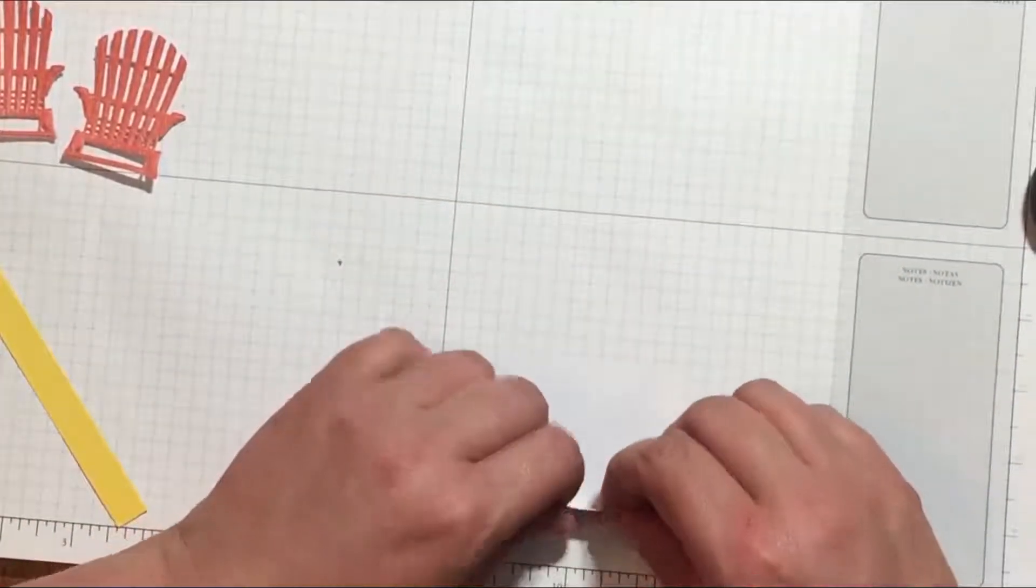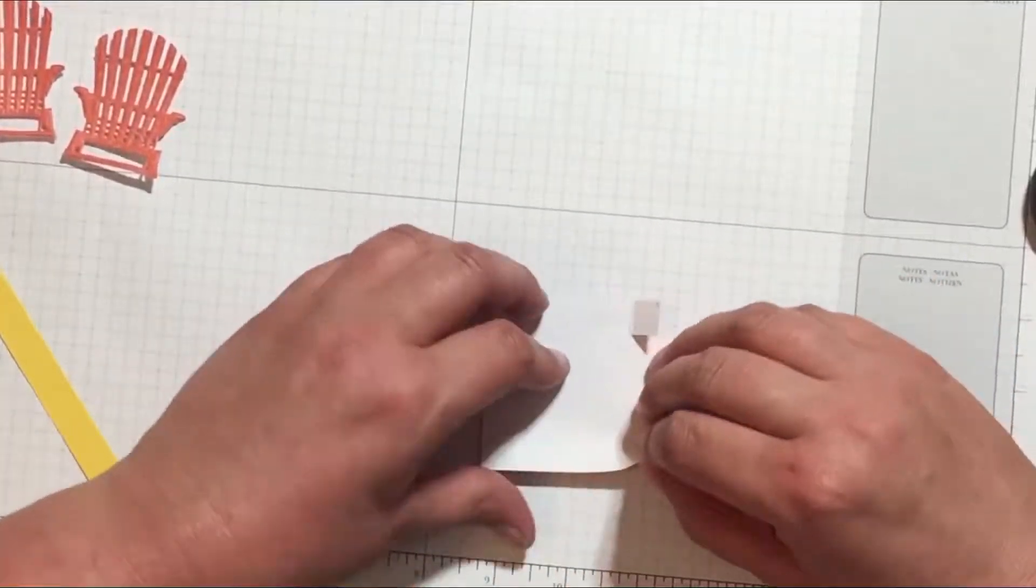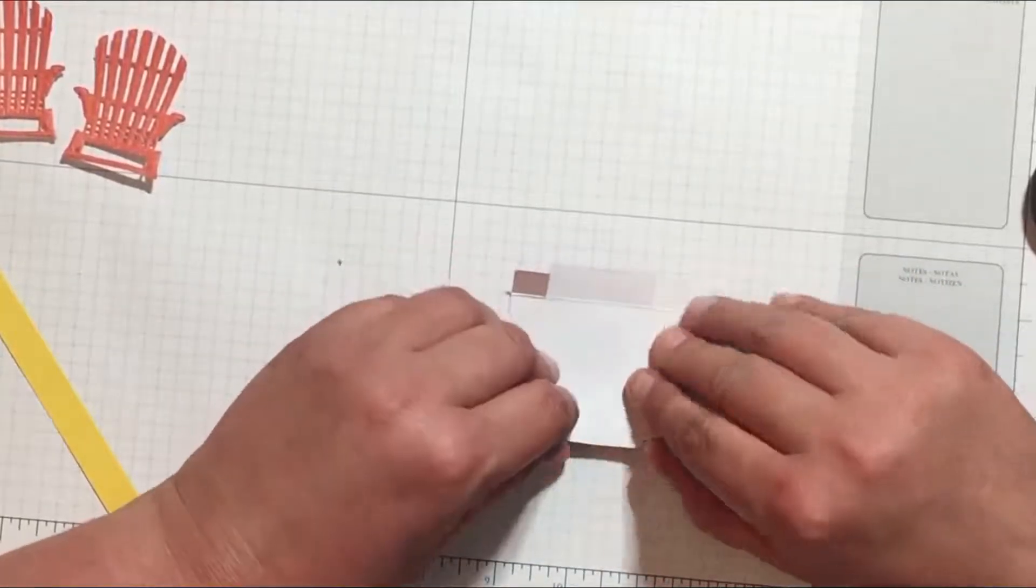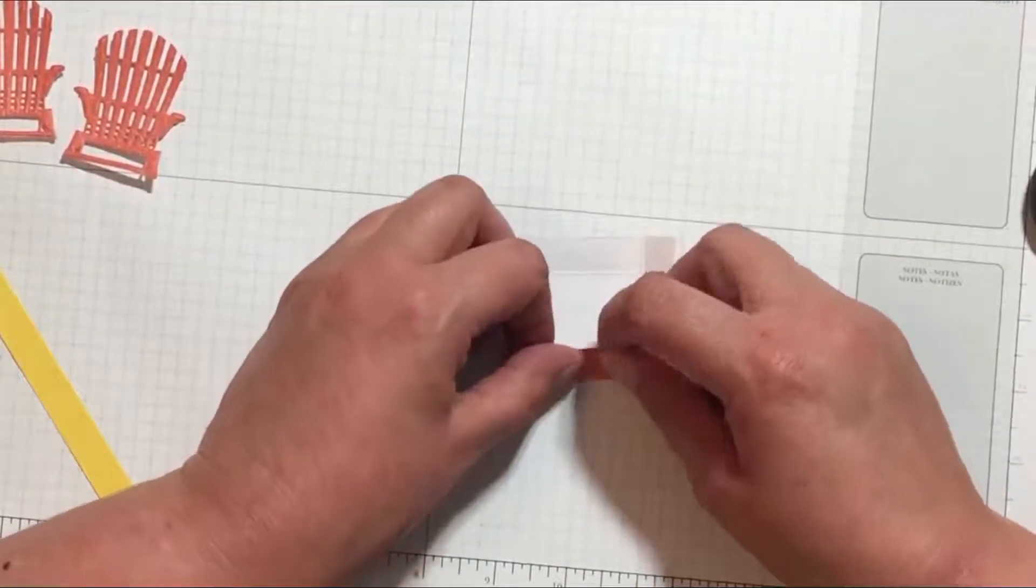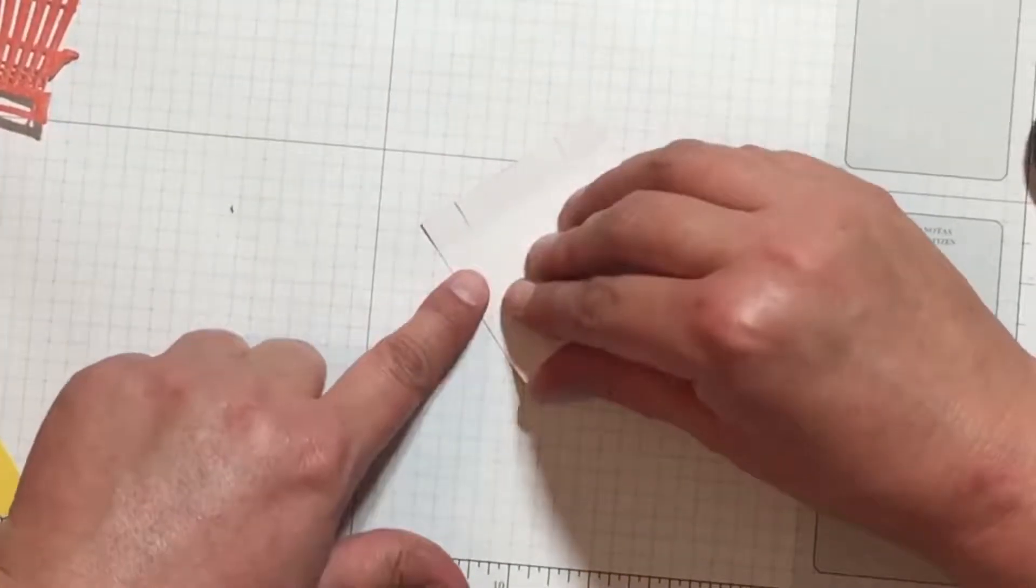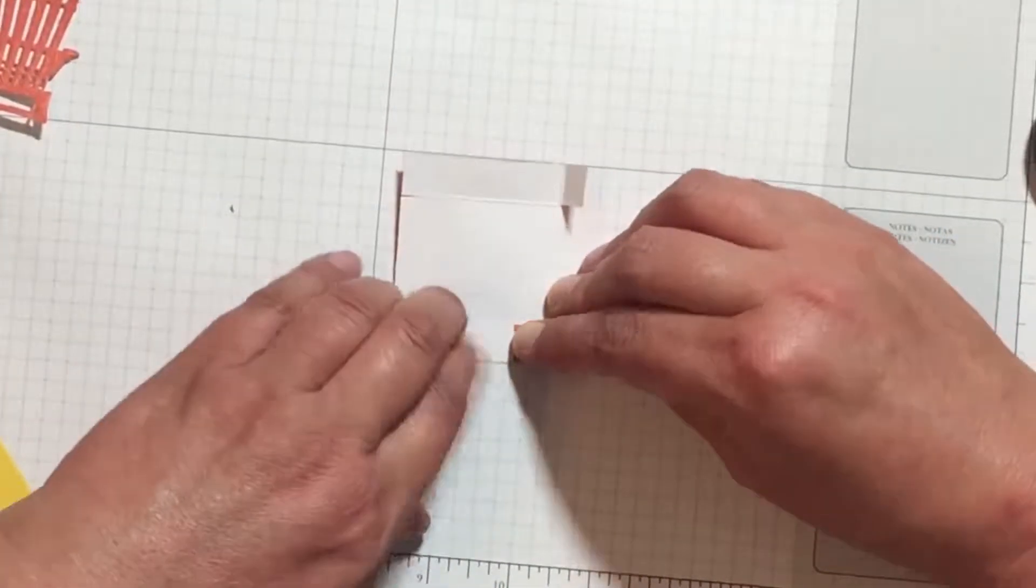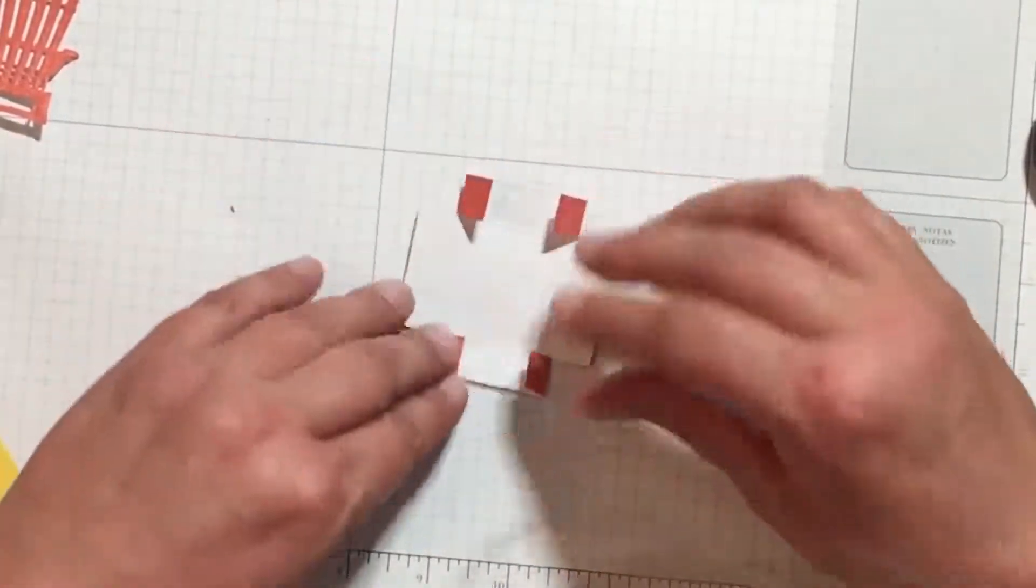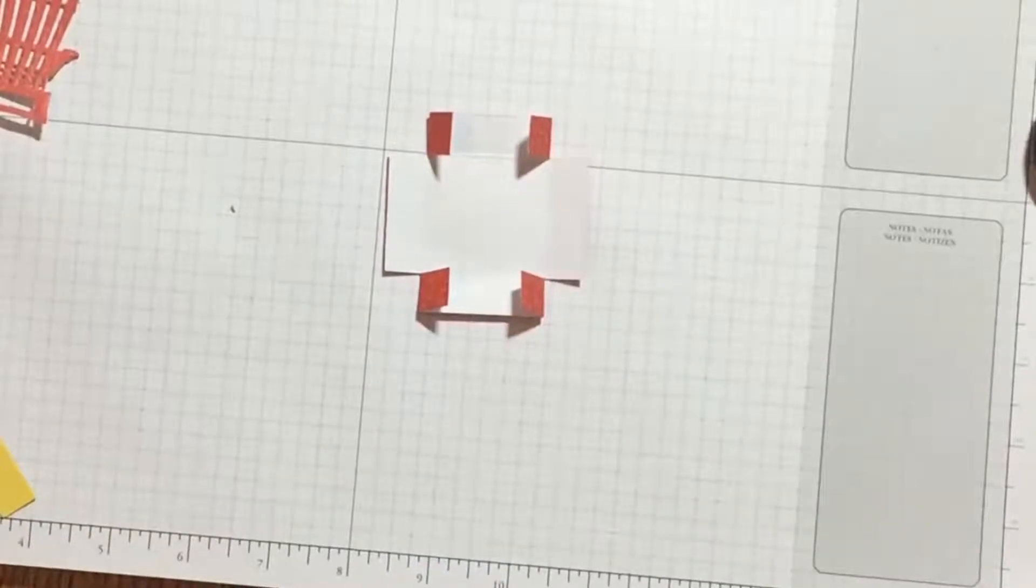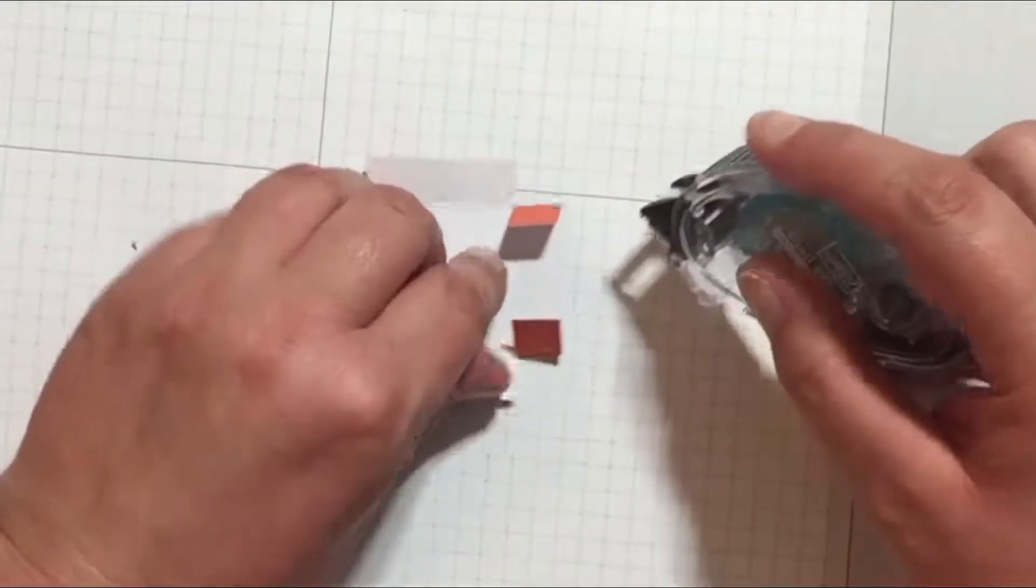Next you just want to fold up each of the sides and tabs along those score lines to crease them and then unfold them again. Once you've got all the sides creased, fold just the little tabs up so that the front of the paper is facing up and then add some adhesive to each little tab.